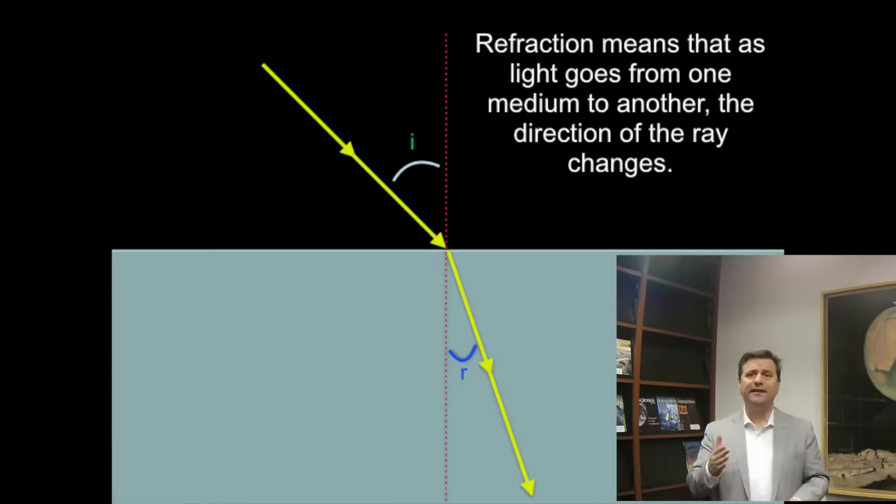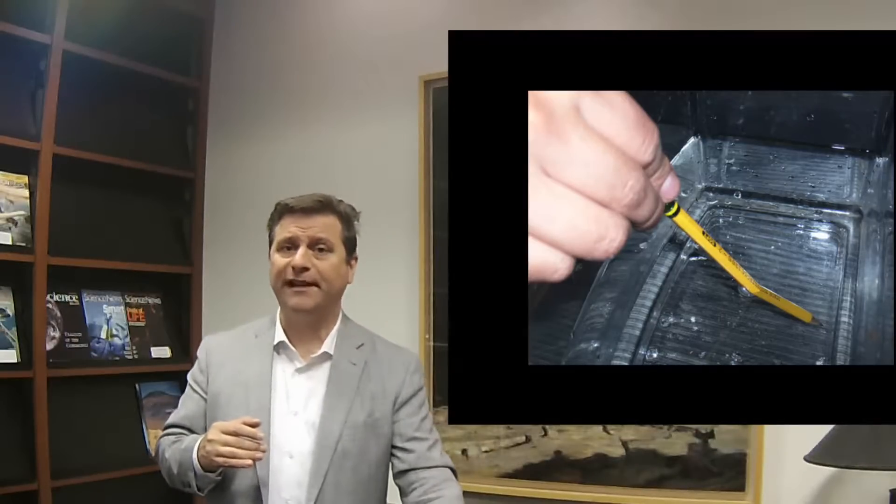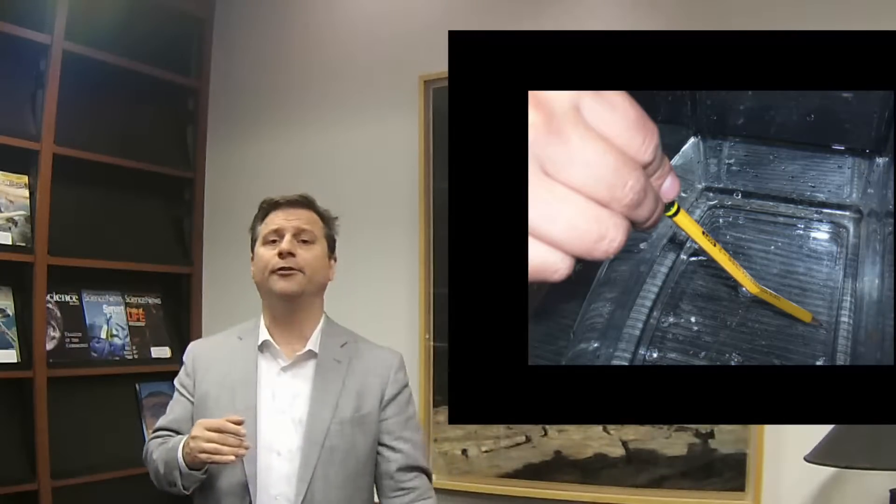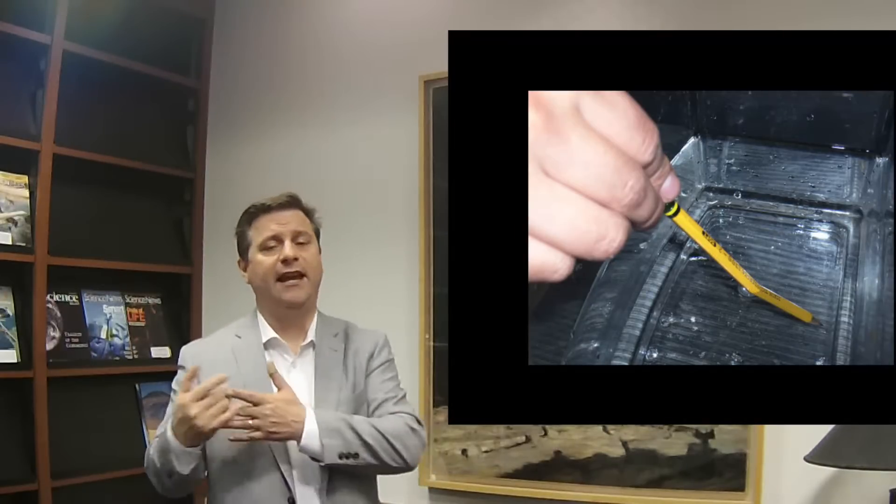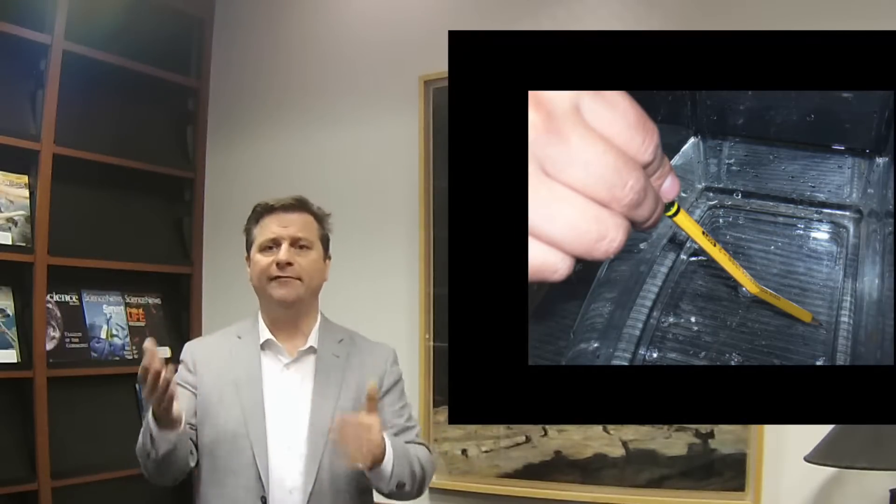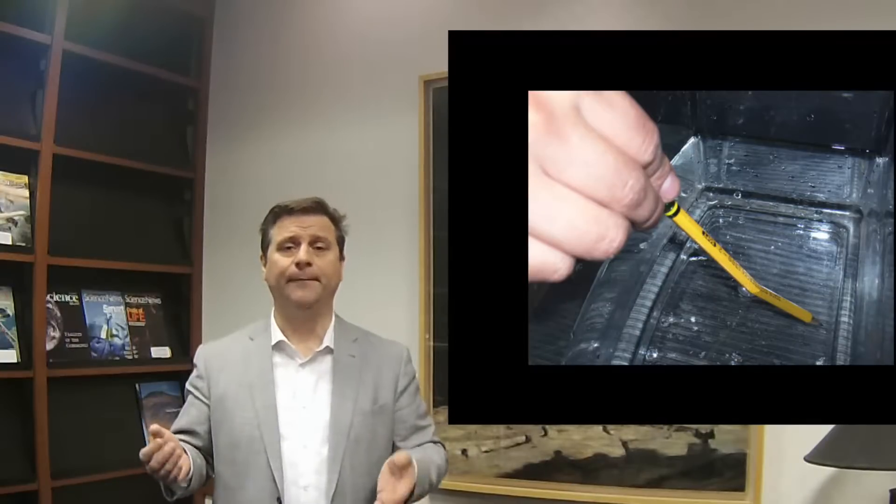That's why when you take a stick and put it into water, the stick looks like it's bent. That's because the light that's reflected off the stick in the water comes out of the water and the direction of the light is changed because the angle of incidence is different than the angle of refraction as it goes from one medium to another. However, Ptolemy couldn't compute anything other than they were proportional to each other.